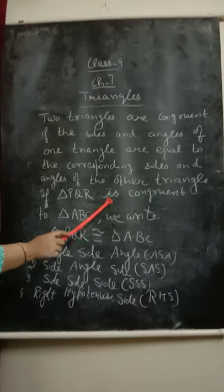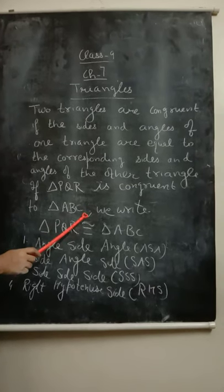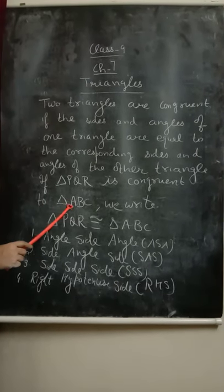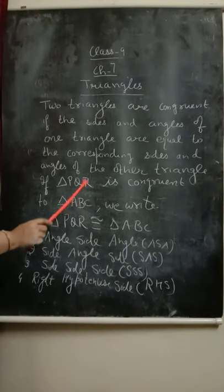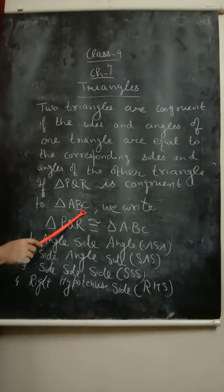So if triangle PQR is congruent to triangle ABC, then angle P will be equal to angle A, angle Q will be equal to angle B, angle R will be equal to angle C.